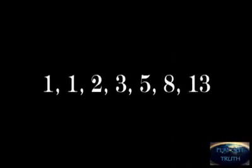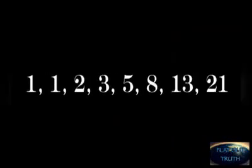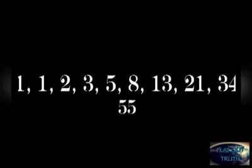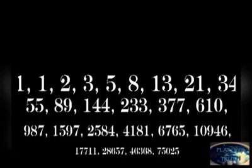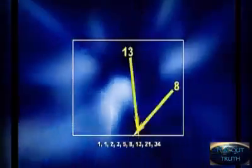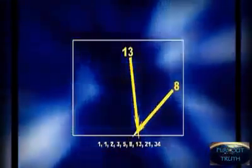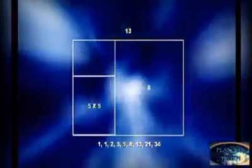The sequence begins with the numbers 1, 1, 2, 3, 5, 8, 13, 21, 34, and continues indefinitely. Each number is obtained by adding the last two digits together. A rectangle with the length and width of any two of the numbers of this sequence forms what is known as the golden rectangle — a perfect rectangle.